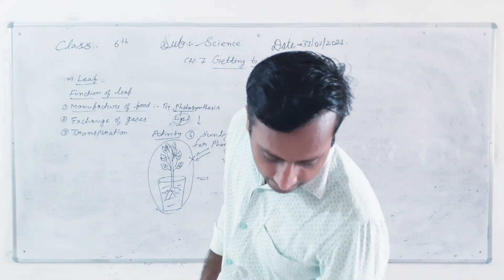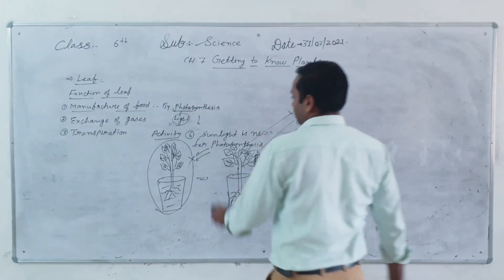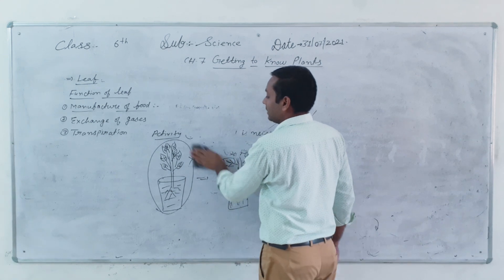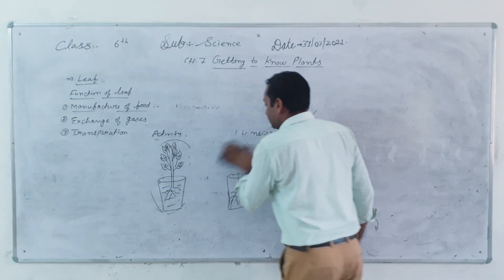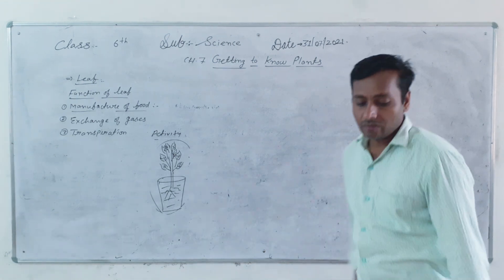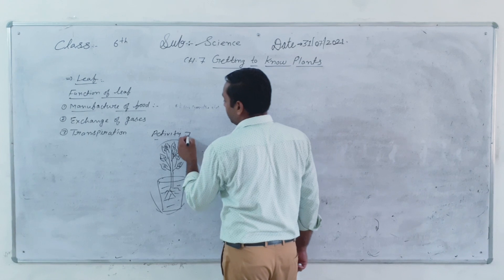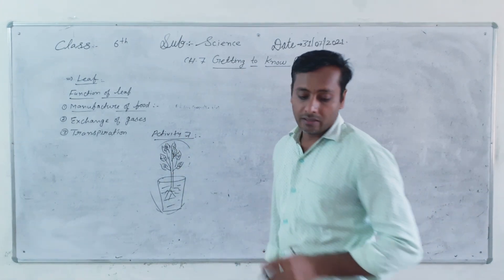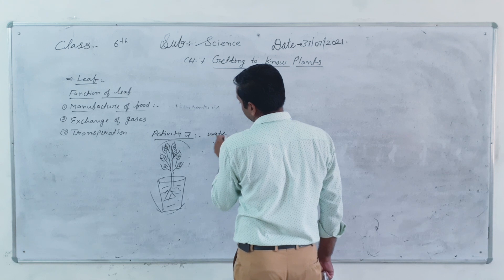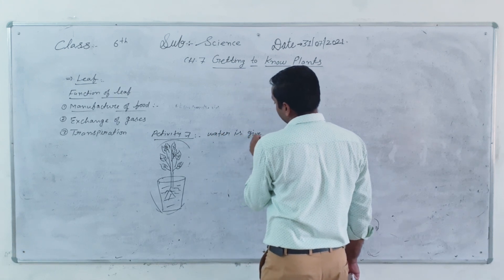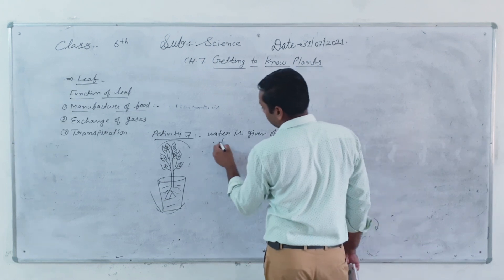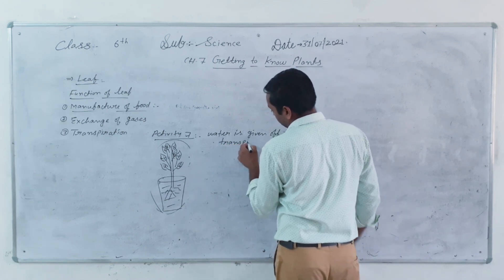Next activity is Activity number 7: to demonstrate that water is given off during transpiration. Transpiration means that water is released from the plant as vapour. Water is given off during the transpiration process.